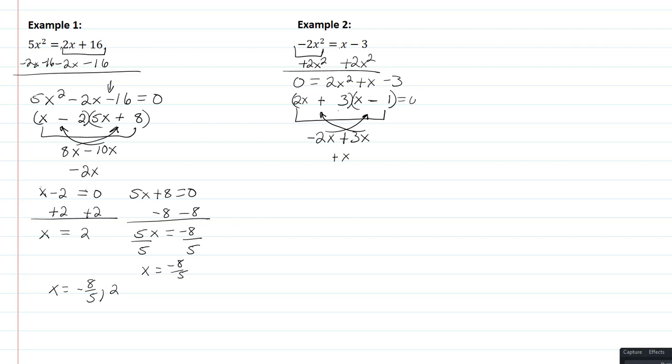I have 2x + 3 = 0 and x - 1 = 0. Solving the first one, I'll subtract 3 from both sides. I get 2x = -3. Dividing by 2 gives x = -3/2.